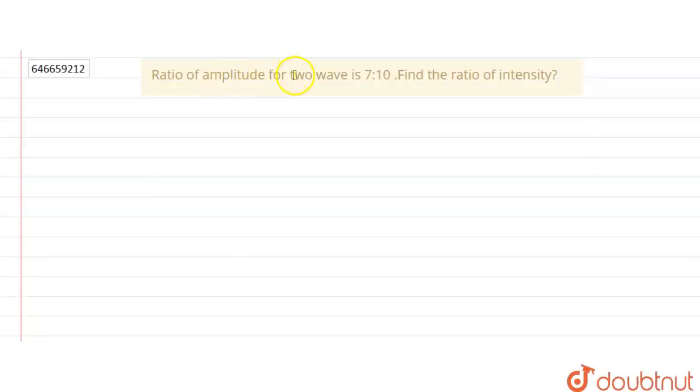Hello, the question says the ratio of amplitude for two waves is 7 to 10. Find the ratio of intensity.